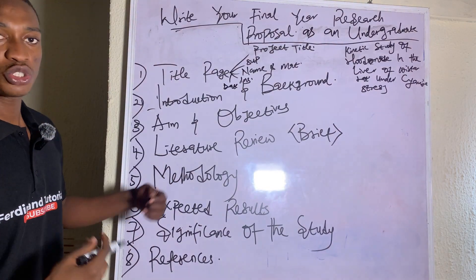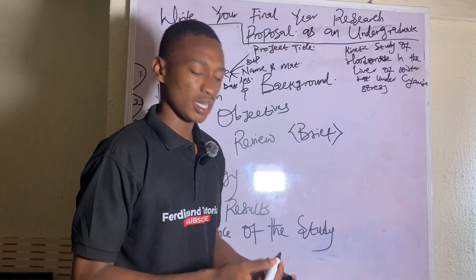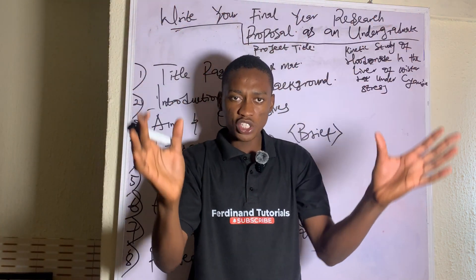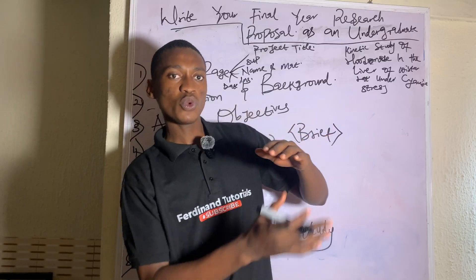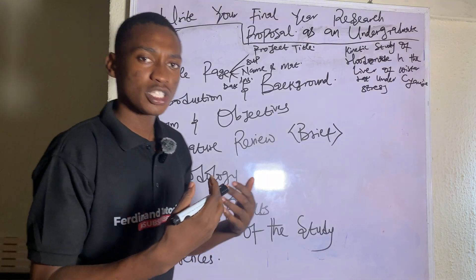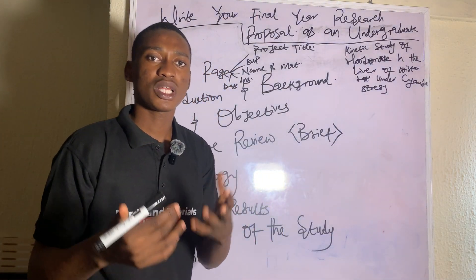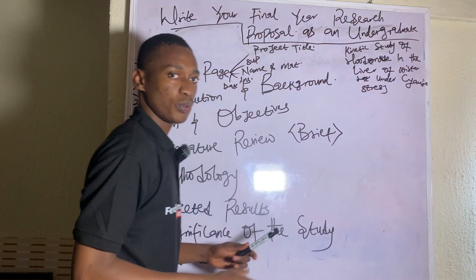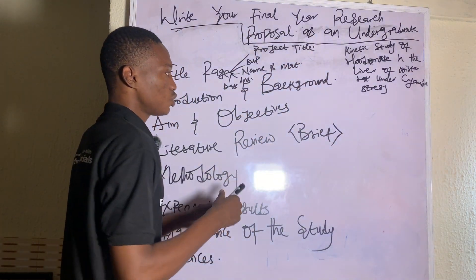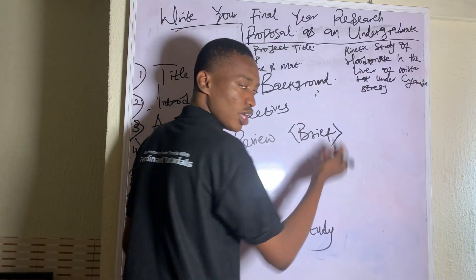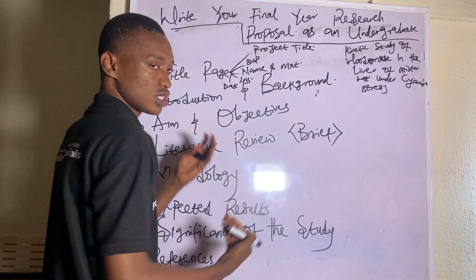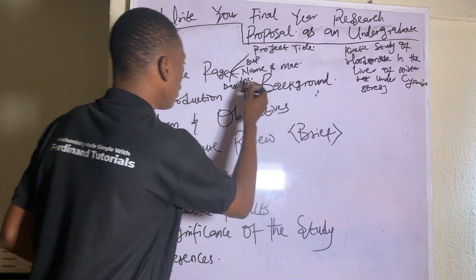The second section is Introduction and Background. This is where you tell us about your topic holistically — what is it all about. After explaining the topic, you also try to explain important parameters. For instance, using this topic, you would explain the meaning of rhodanese enzyme and what cyanide stress means. Those are the key terms you need to explain.